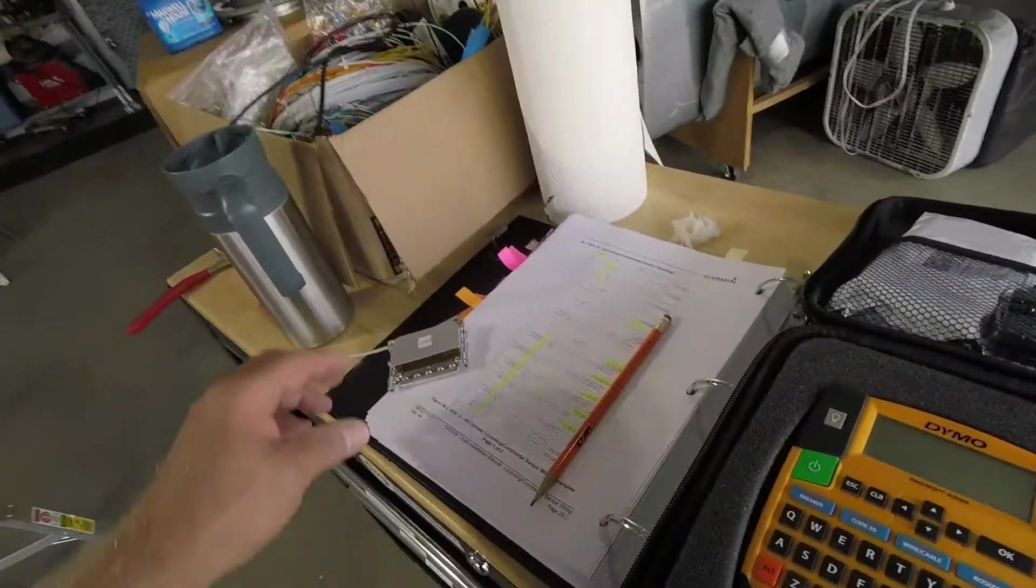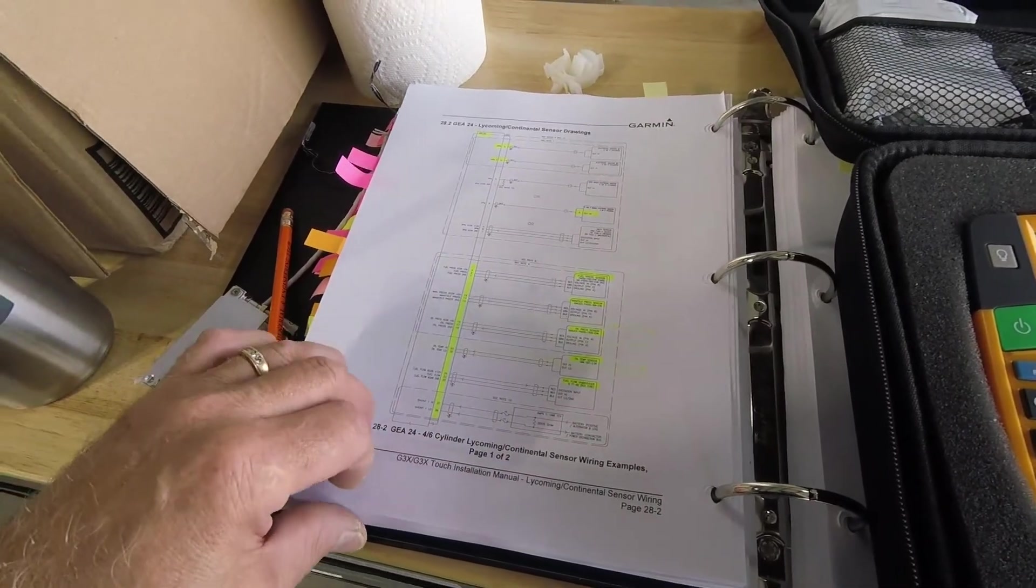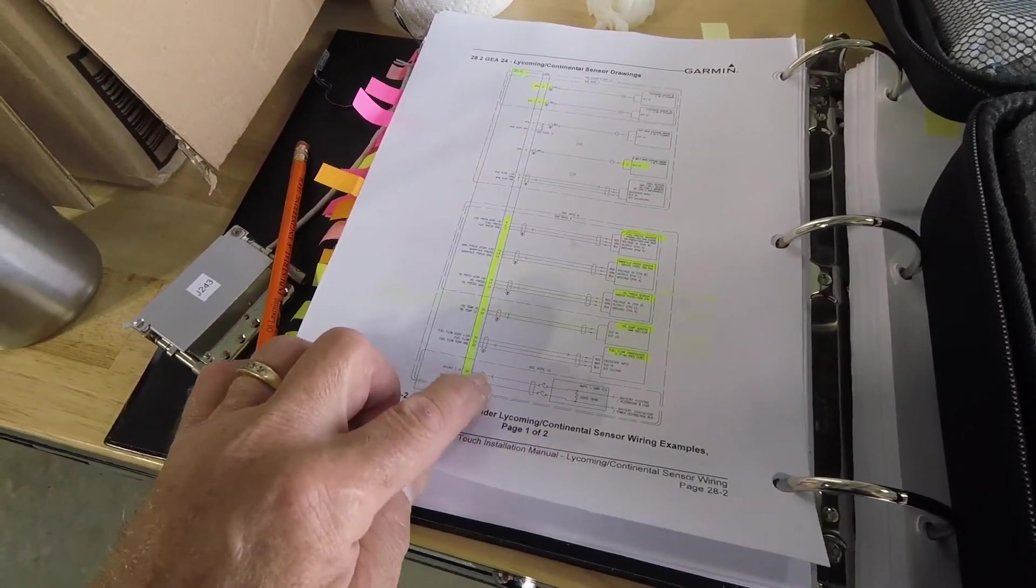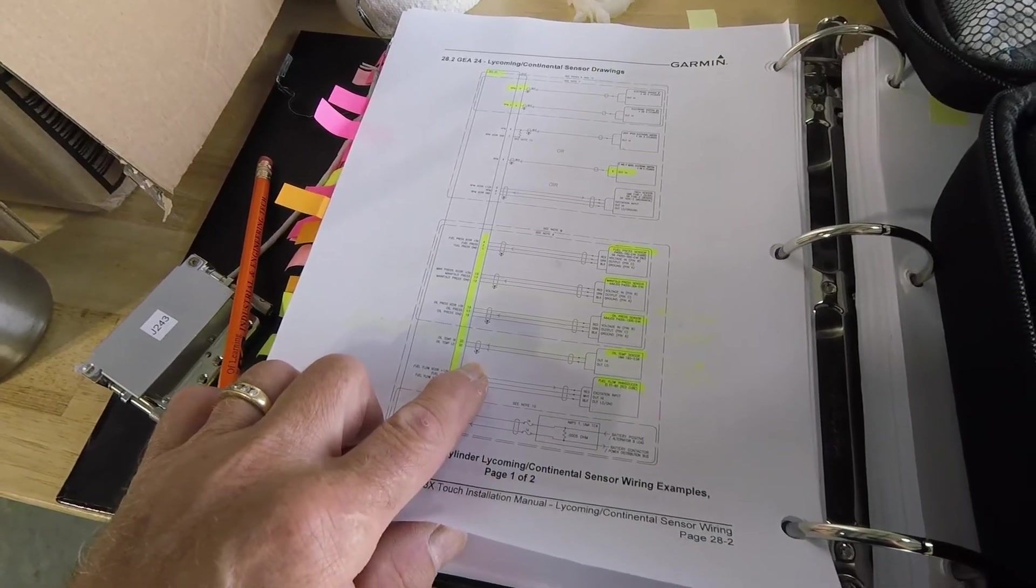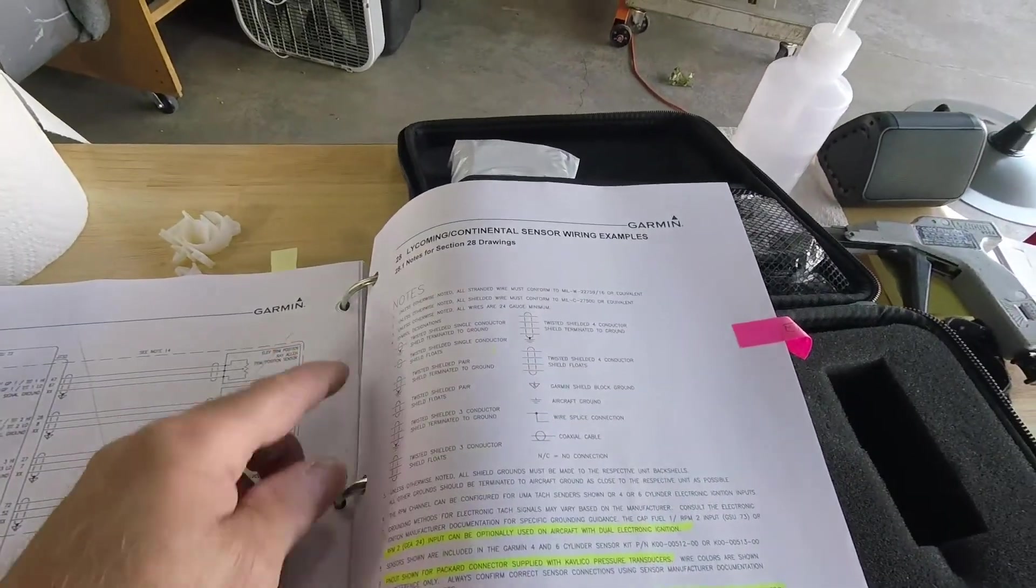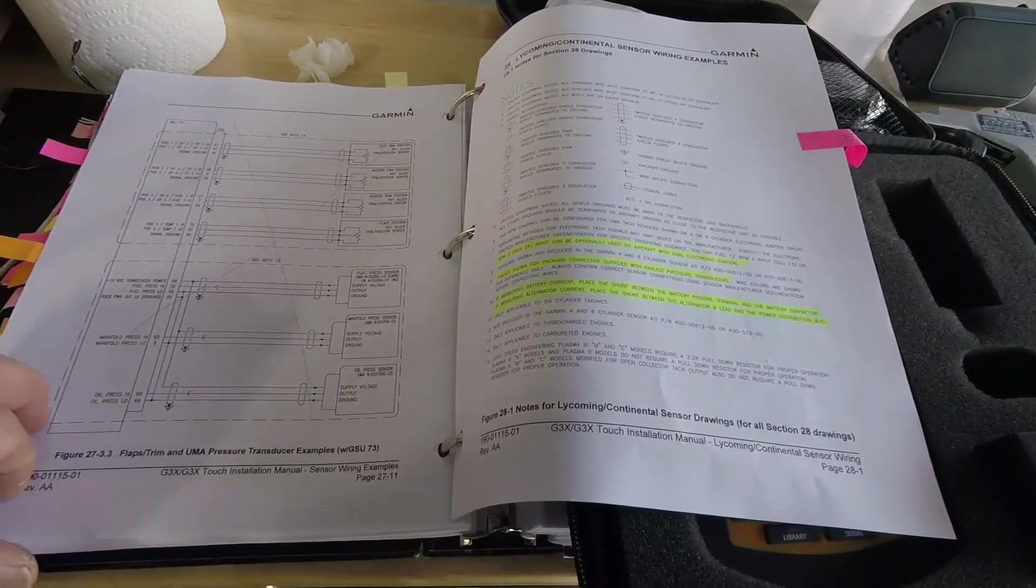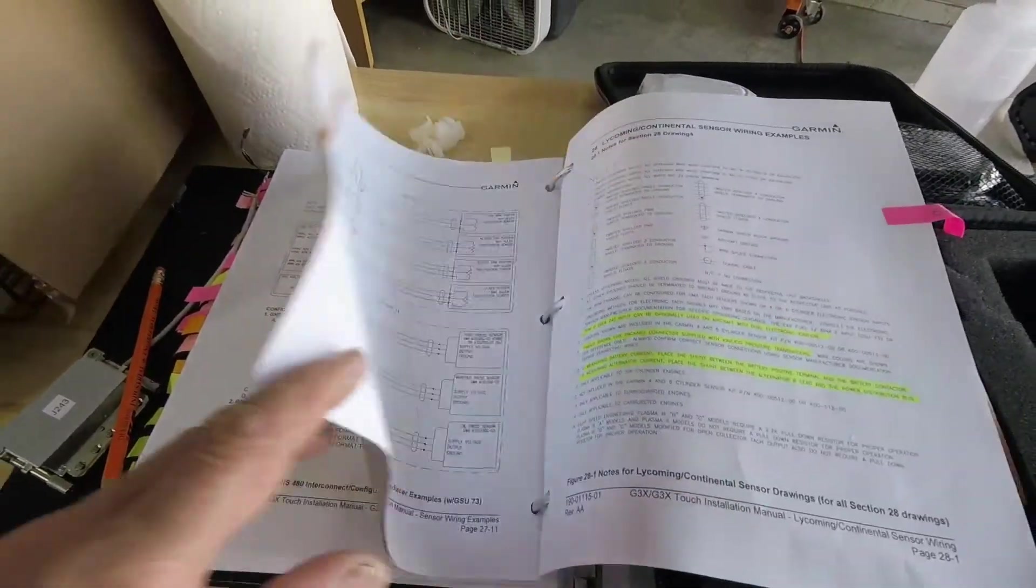That is spelled out in the Garmin manual. If you look at the symbology, you can see it's grounded at this end. That's the connector. It's not grounded at this end. The shield is not. So the notes are right here. What to do. How to do it. Go back further in the manual. It'll show you what you need to do.